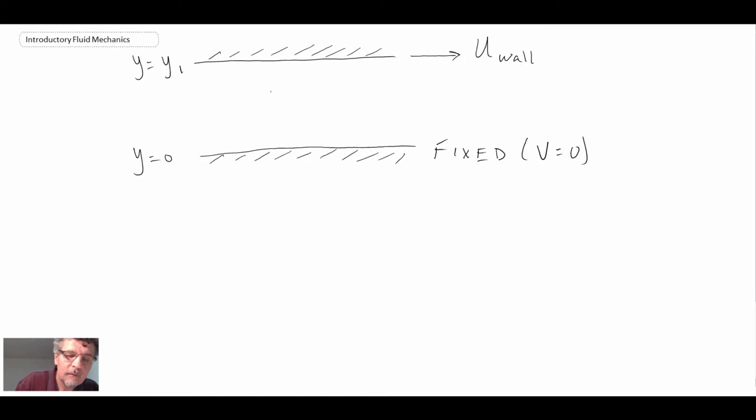Imagine we have an upper wall and a lower wall. For this particular case, the lower wall is fixed. If it's fixed, it's not moving, consequently the velocity is equal to zero. Let's imagine that the upper wall is moving. Between these two plates we have a fluid, and our velocity profile may look something like this, u as a function of position y.